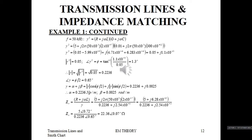When F is 50 kHz, we proceed the same way, replacing 50 Hz with 50 × 10³. All other parameters remain the same. Gamma squared is again 0.05, with the angle phi equal to 1.3 degrees. The magnitude of gamma is again 0.2236, and the angle of gamma is 0.65 degrees. Therefore, alpha is 0.2236 nepers per meter while beta is 0.0025 radians per meter.